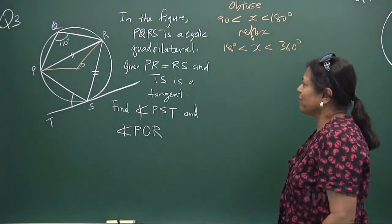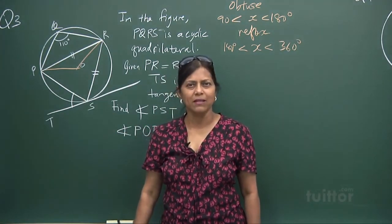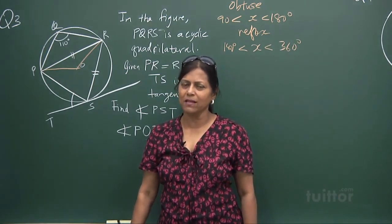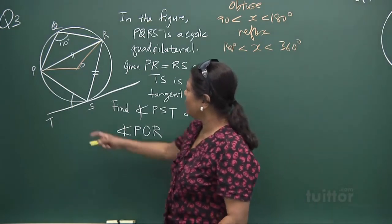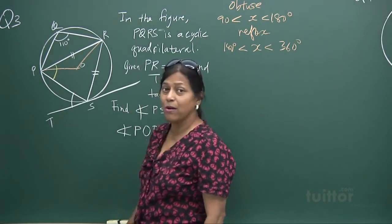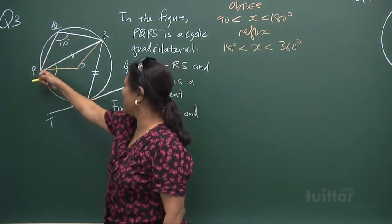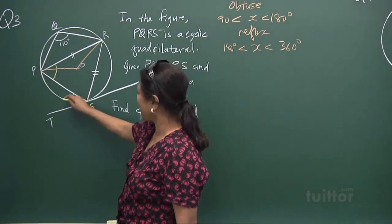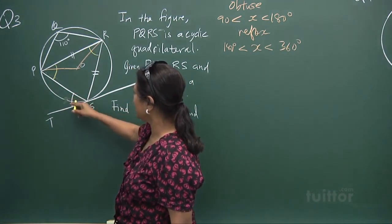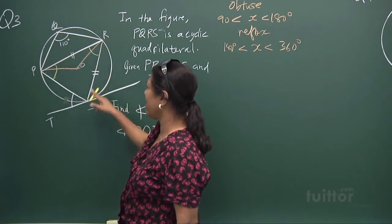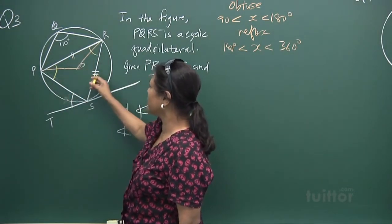First we need to find angle PST. When you see a chord and a tangent, you automatically be suspicious and say — alternate segment! So angle PST is equal to angle PRS by the alternate segment theorem, because this angle is made by this chord.